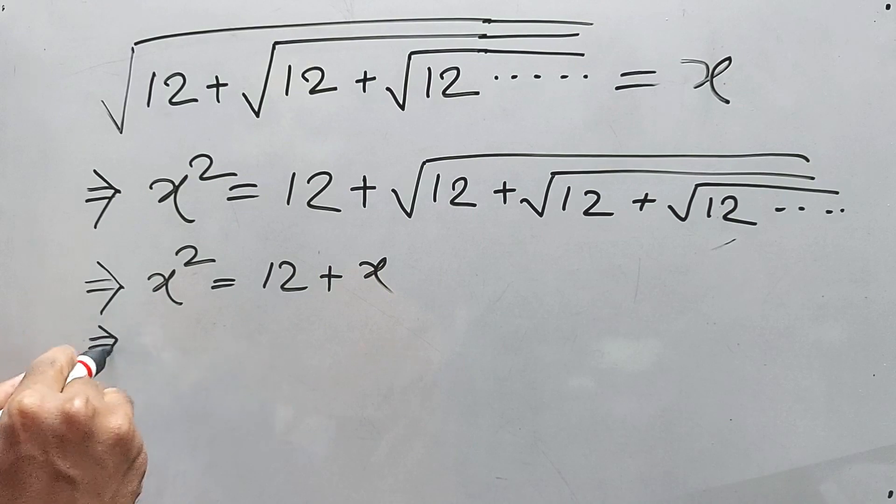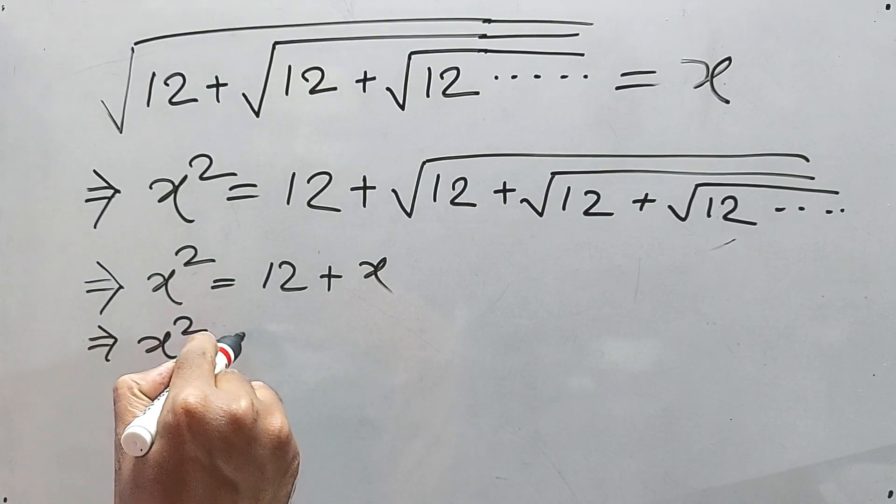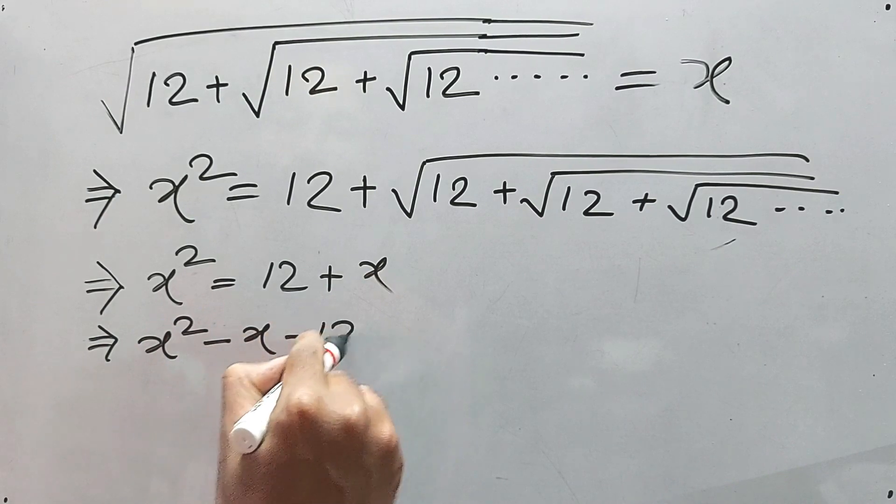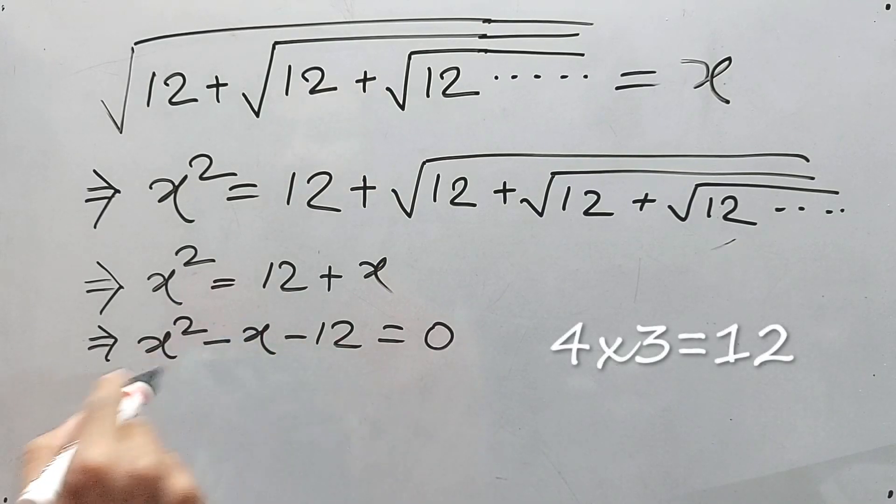Okay, now let's take all those things on the left side. So we'll get x² minus x minus 12 equals 0. Now 4 times 3 is 12, it's a middle term factor. We know how to solve middle term factor, right?